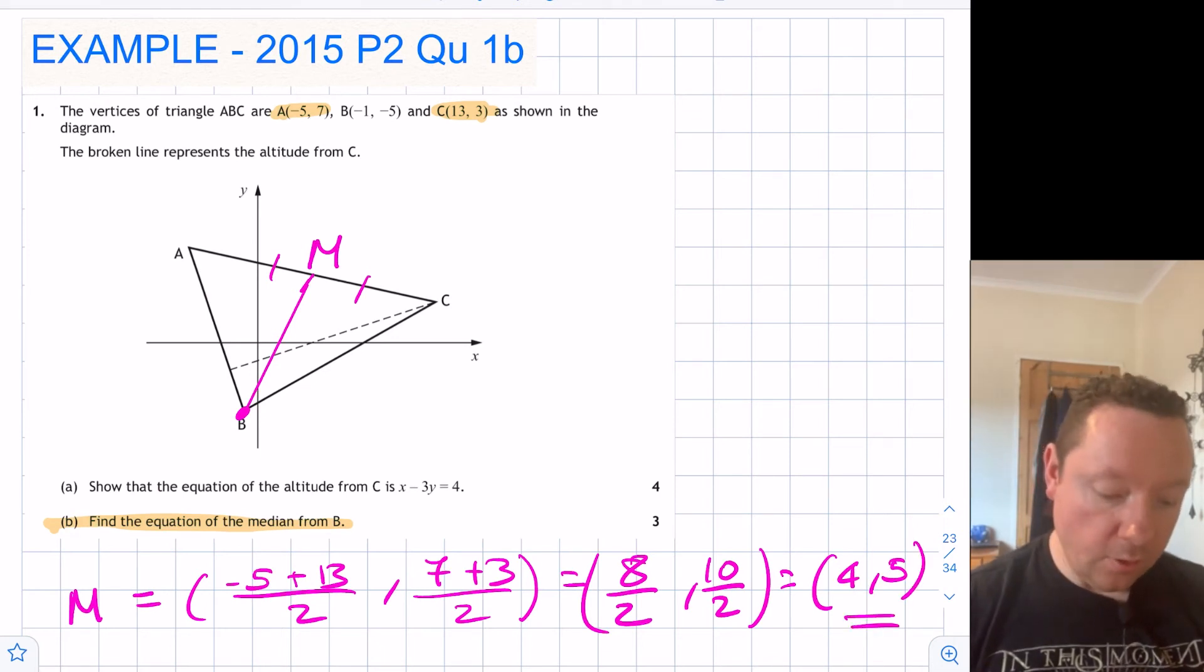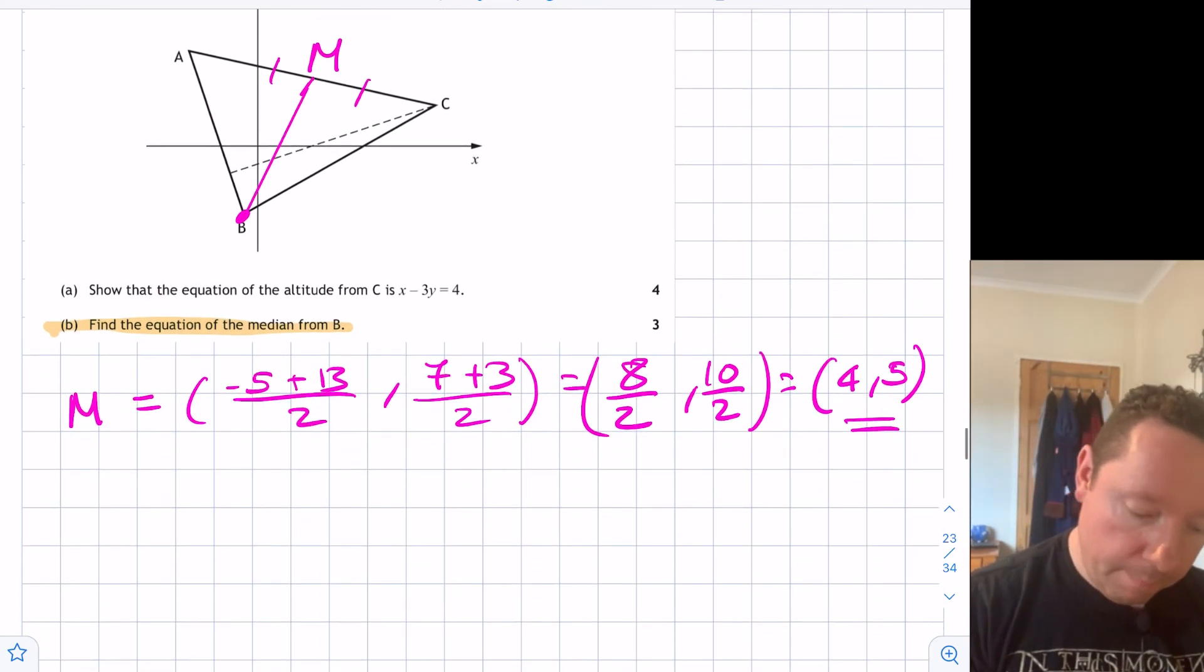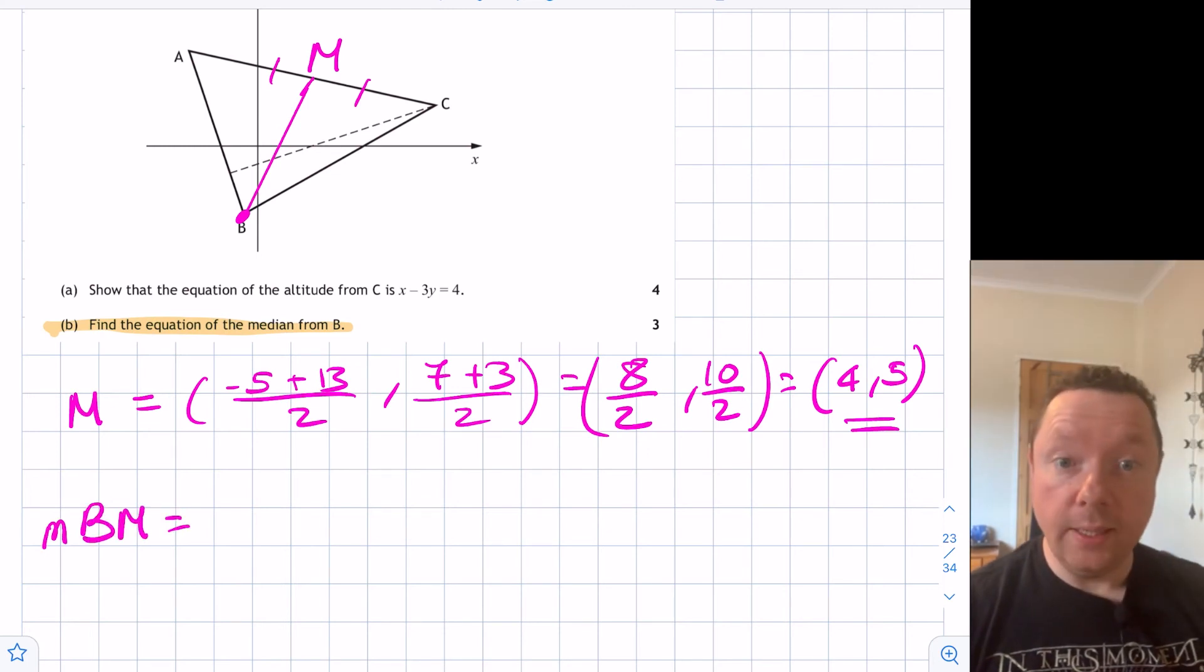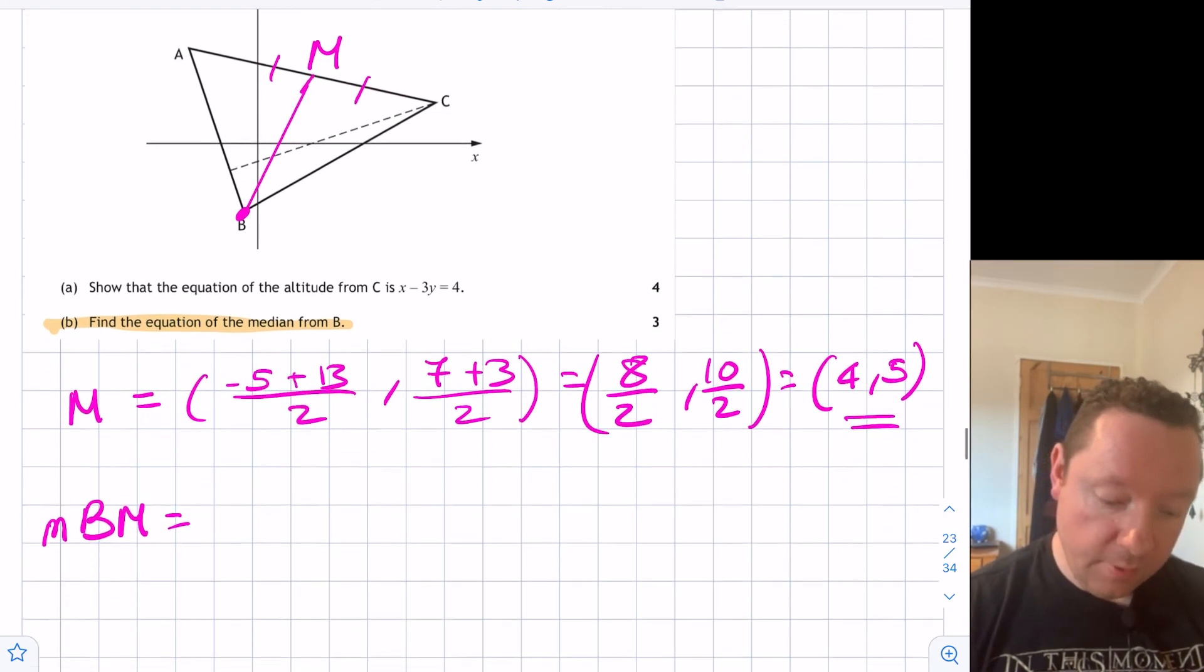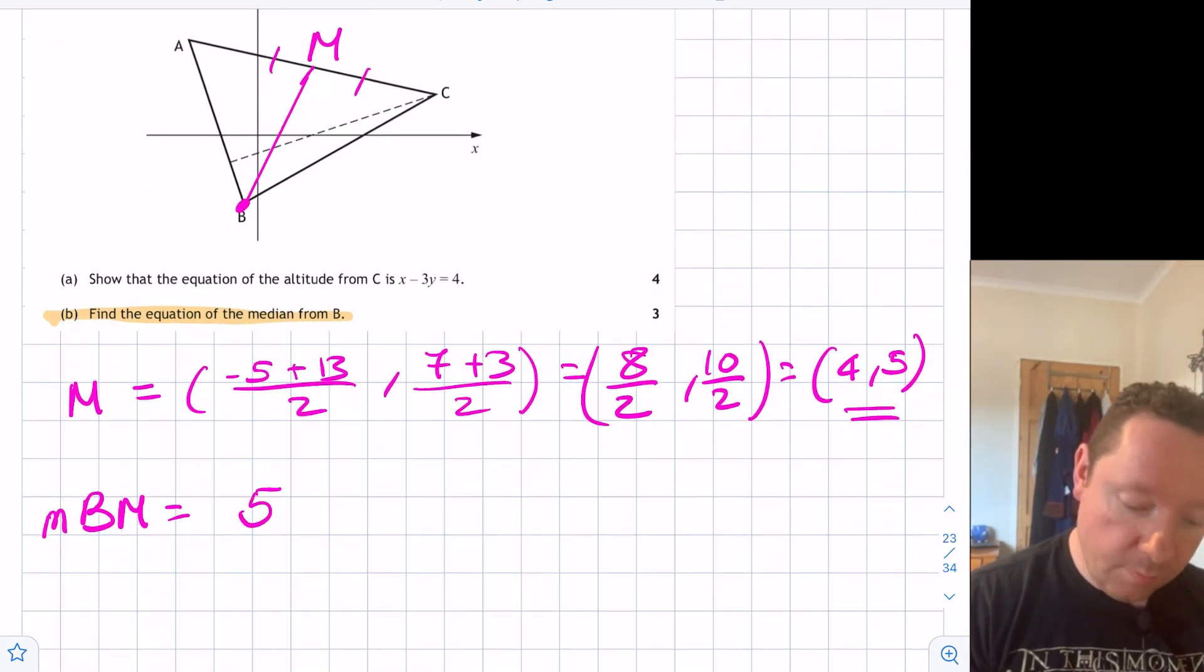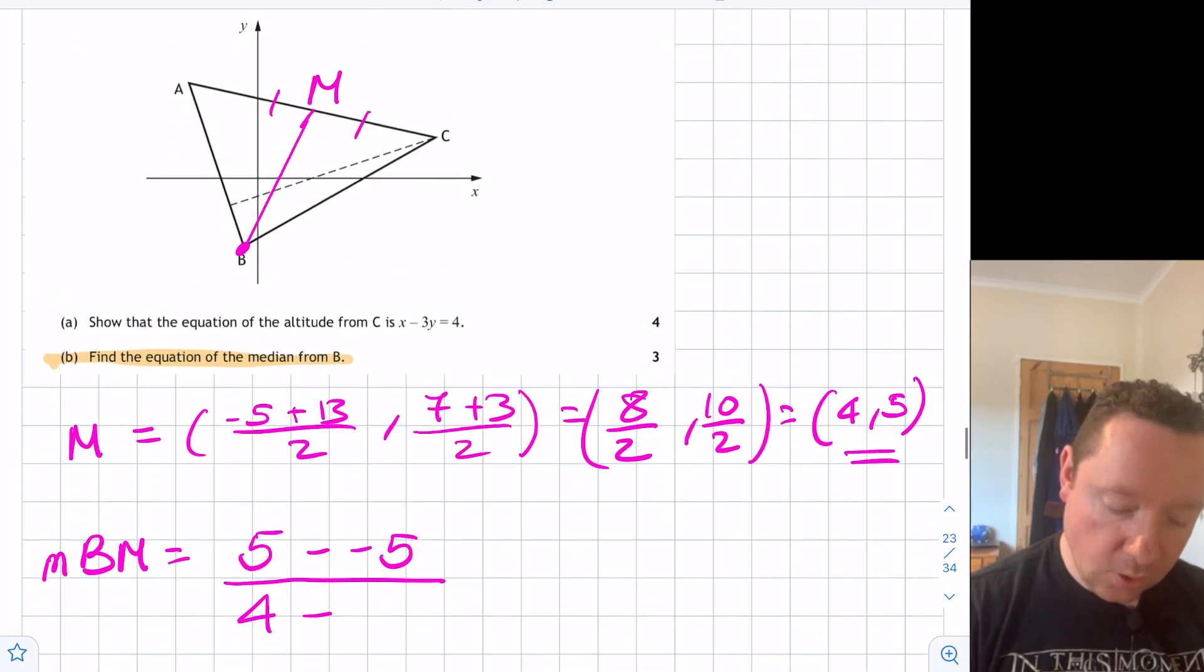We now need our gradient because we always need a gradient and a point. So it's the gradient between B and M. So the gradient between B and M equals we need y2 minus y1. So B is (-1, 5) minus 5. So 5 minus -5 over 4 minus, being very careful, is -1.